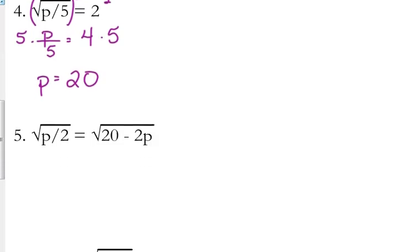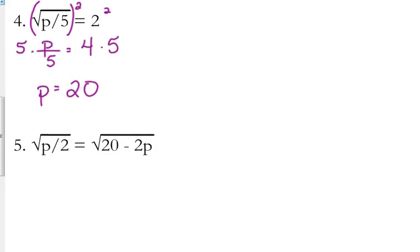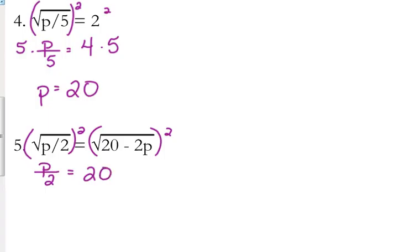Number 5 looks a little different — we have square roots on both sides. But these are the easiest ones. Because if you have the square root of something equal to the square root of something else, the only way they're going to be equal is if what's under the square root is equal on both sides. Or: square both sides, the square roots cancel, and you're left with what was under them.